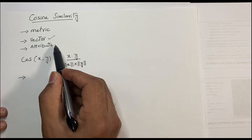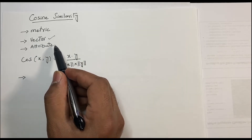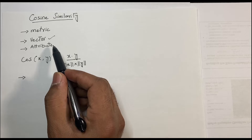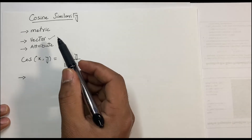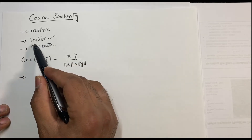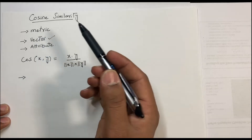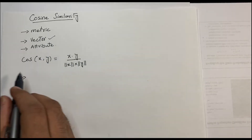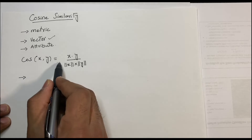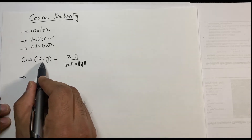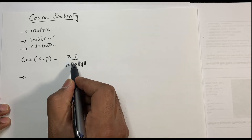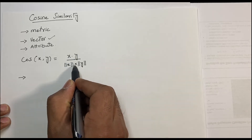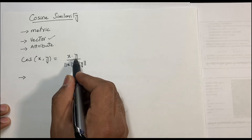In my previous videos, we discussed nominal attributes, numerical attributes, ordinal attributes, binary attributes, and mixed attributes, where we treated that object as an attribute. But in cosine similarity, we treat that object as a vector. The formula is: cos(x, y) = x·y divided by ||x|| multiplied by ||y||.